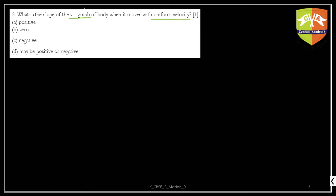Before jumping to conclusions, let's first understand the meaning of the keyword 'slope.' You would have encountered this word when going trekking. Let's say this is a mountain and you are going for a trek. This is one slope and this one is a more arduous slope. We say the slope of the second mountain is more and the first mountain is lesser — the second mountain is steeper.